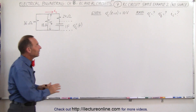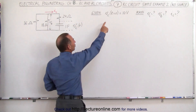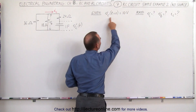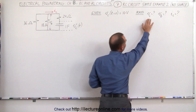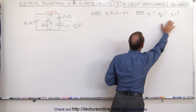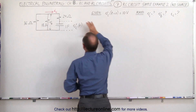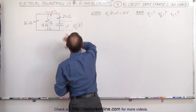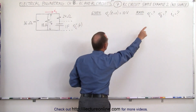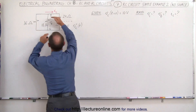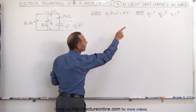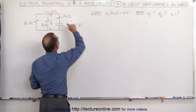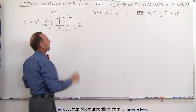Given that the initial voltage across the capacitor is 10 volts, we are asked for three things: the voltage across the capacitor, the voltage across that branch, and the current through the capacitor.